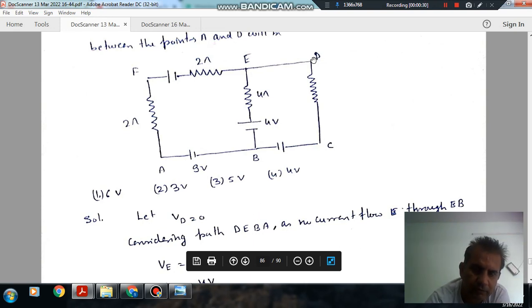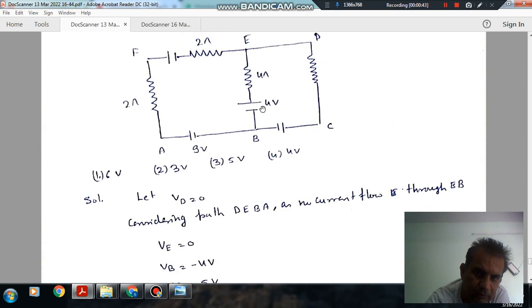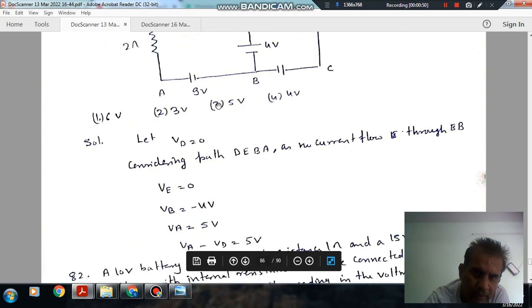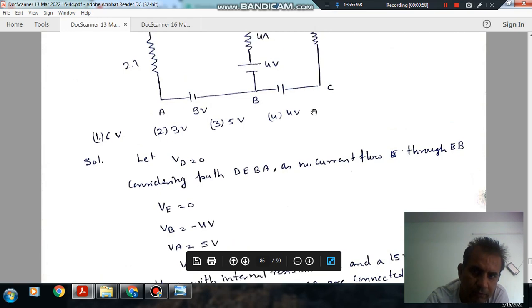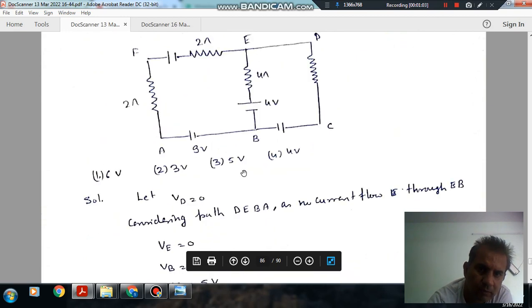So, let the potential at D point is 0. Then the potential at E point will also be 0. And as no current flows through this, the potential at B will be only due to this 4V, and it is positive and negative will be minus 4V. And the potential at A will be minus 4V plus 9, or that is 5V. So, VA will be 5 and VD is 0. So, VA minus VD is 5. Answer is option 3.